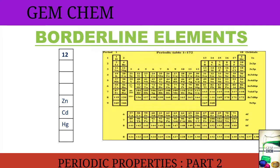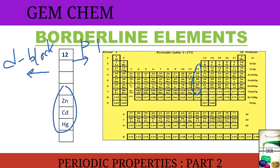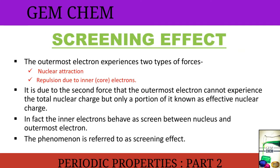Now, what are the borderline elements? The borderline elements are specifically zinc, cadmium, and mercury — present in Group 12. This group is known as borderline elements because on one side they have d-block elements and on the other side they have p-block elements. They are not strictly transition elements and are therefore referred to as borderline elements.